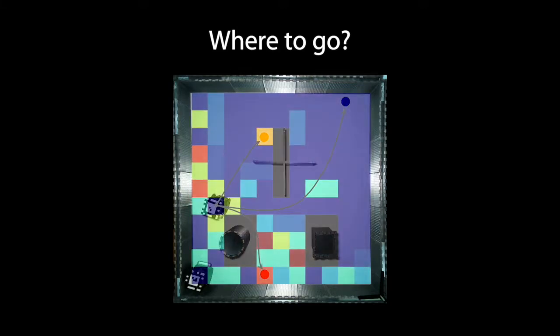After generating the value maps, the hider robot can choose the farthest goal point with the highest safety levels.